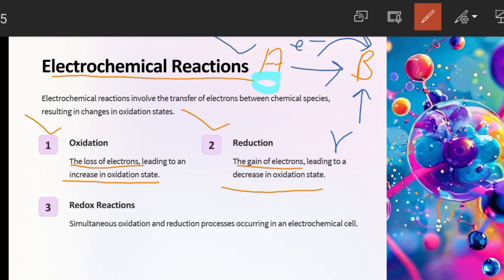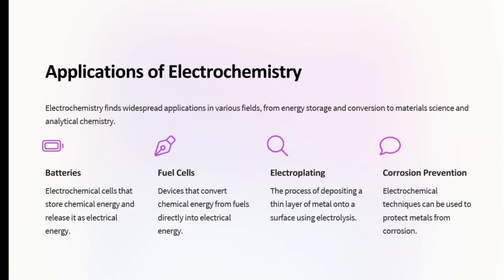The species that loses electrons will have its oxidation state increase, and the species that gains electrons will have its oxidation state decrease. I will make a next topic on this where we will also see the reactions and study the galvanic cell. These electrochemical reactions are basically called redox reactions — a combination of oxidation and reduction.